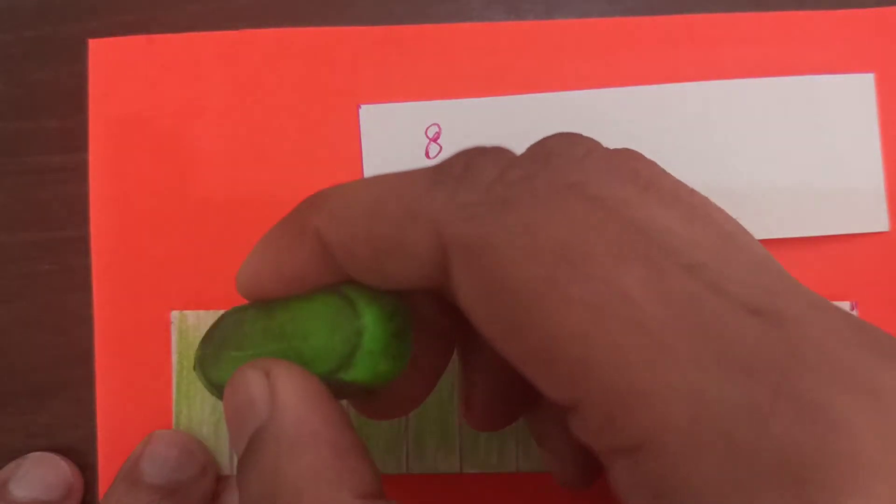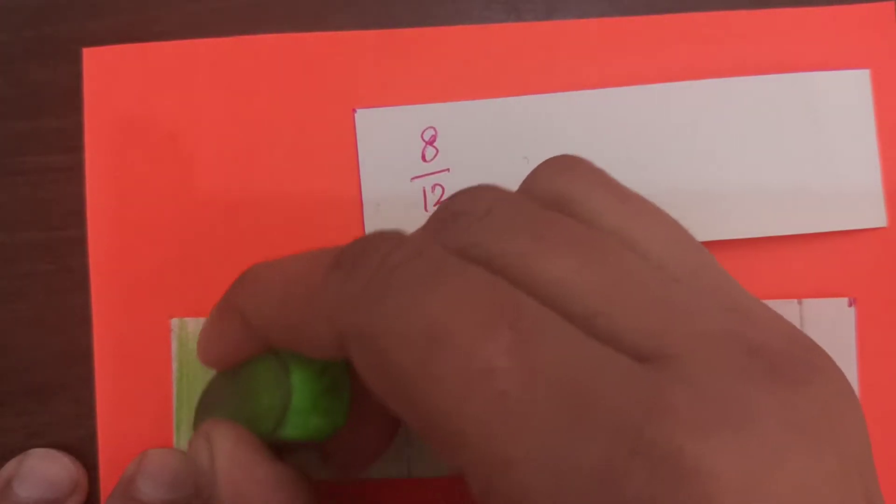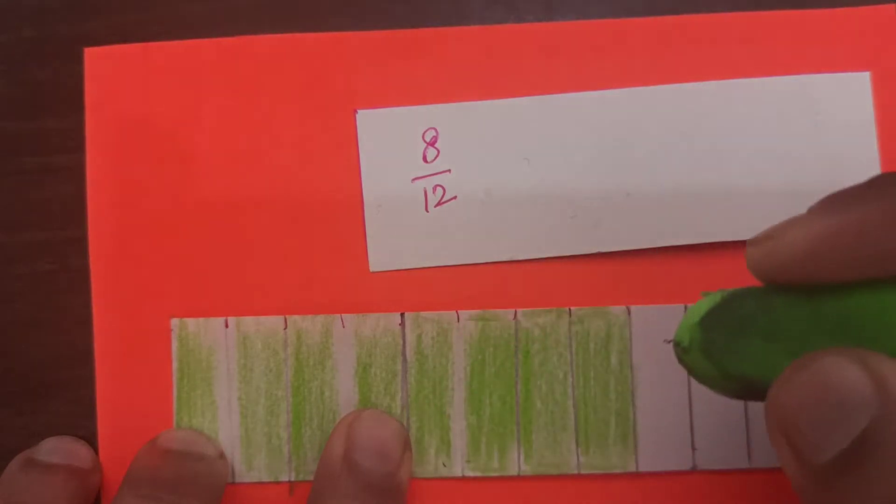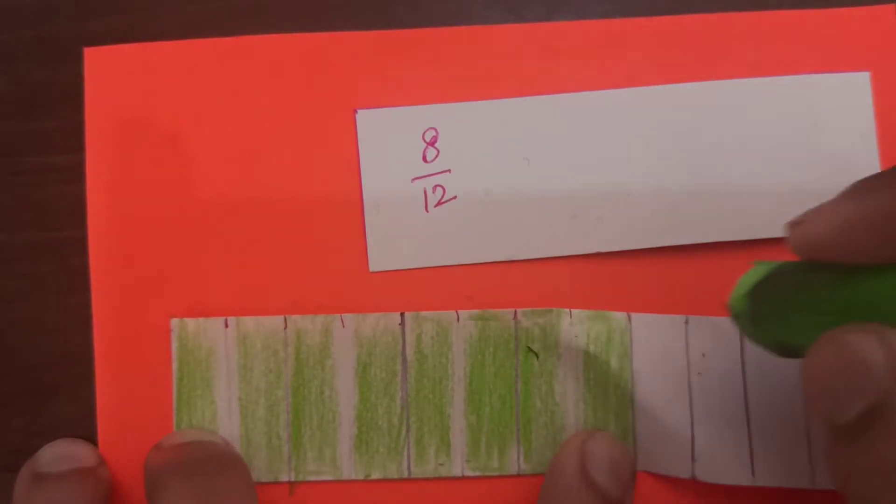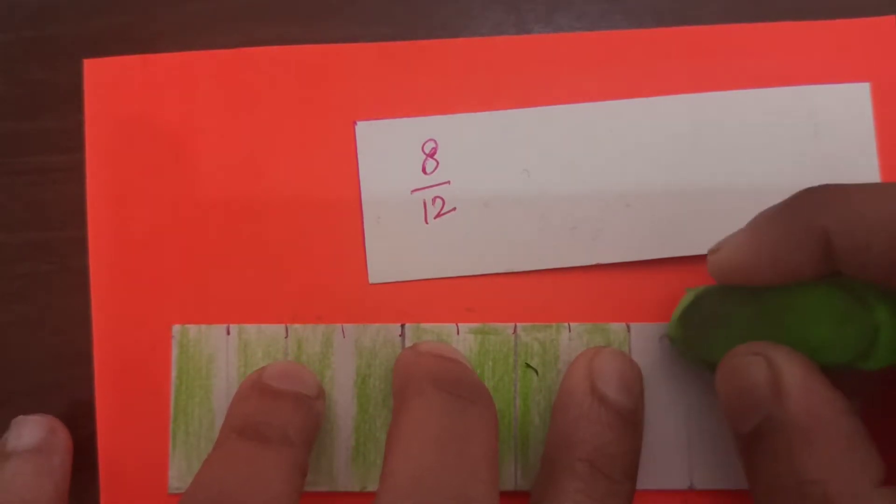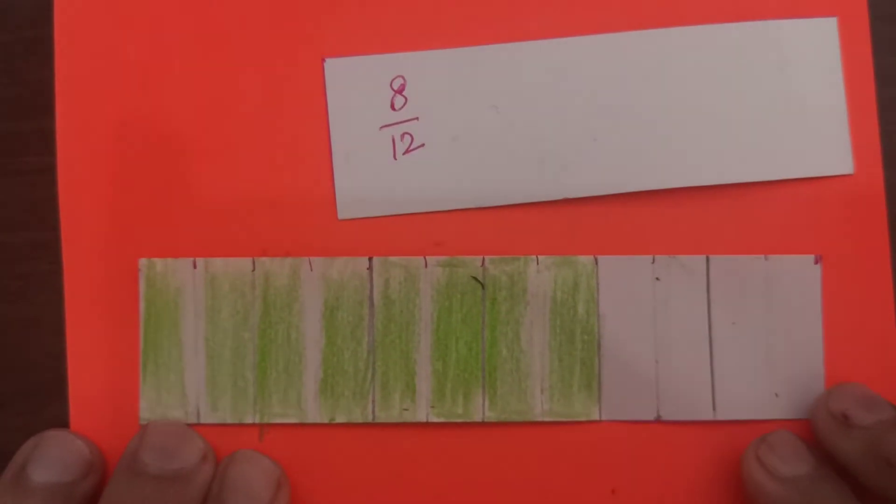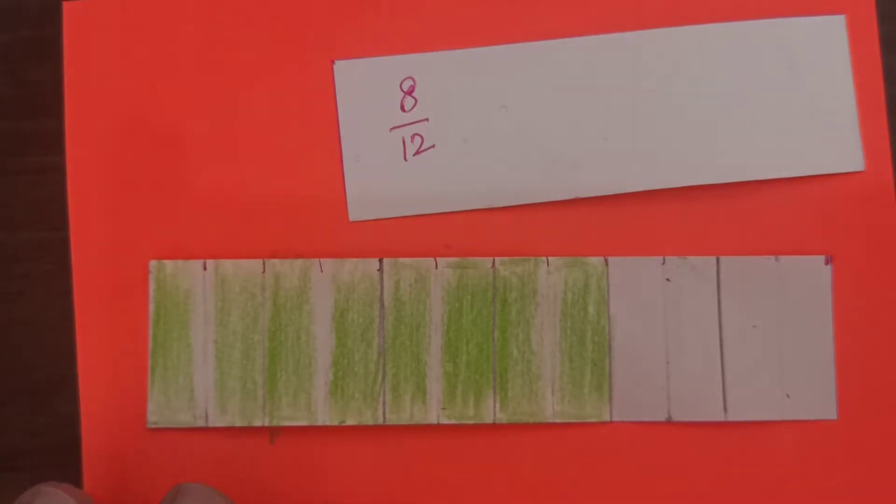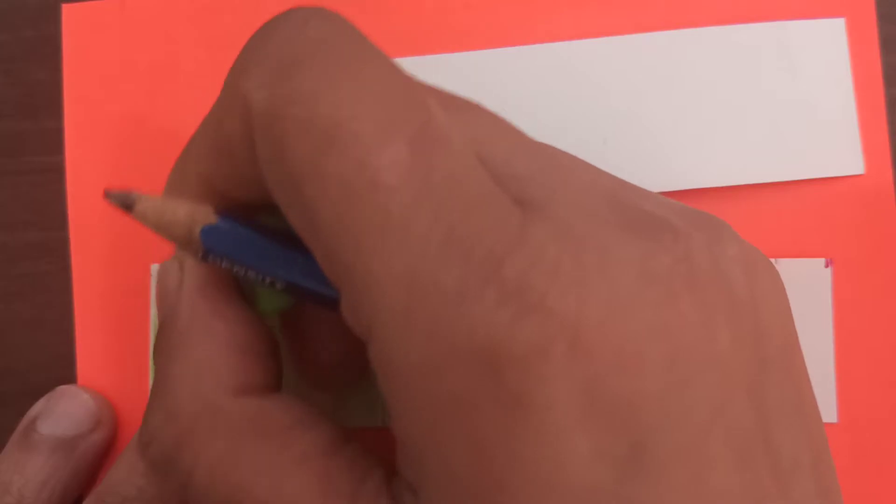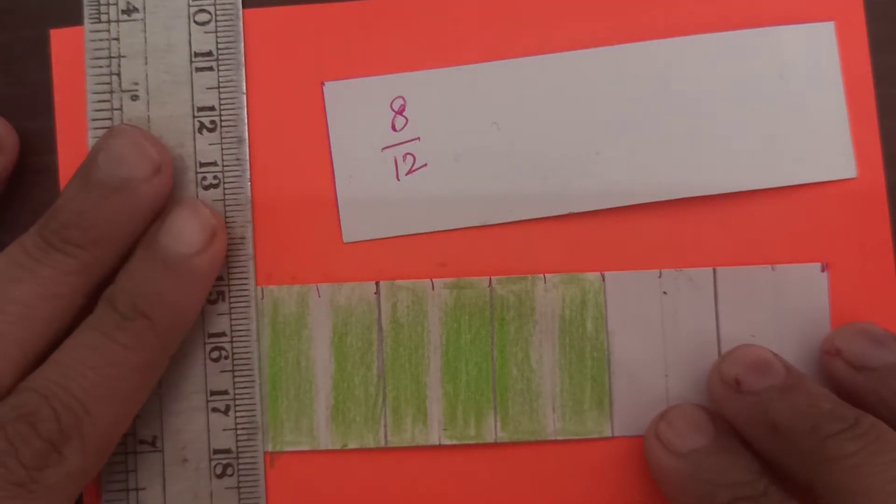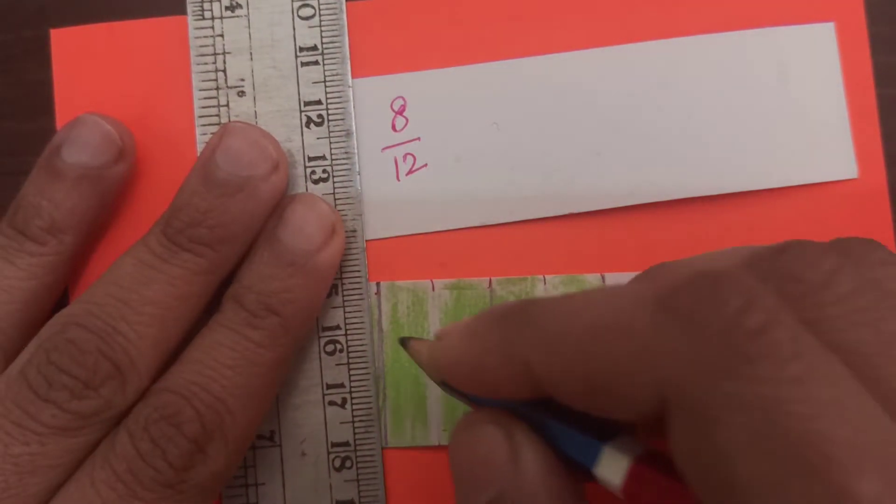Now, see what I am going to do. I will erase one of these lines. One line I am going to leave and I am just going to erase the alternate lines. Carefully. When I erase, what do I get now? I see that the total number of parts have decreased.